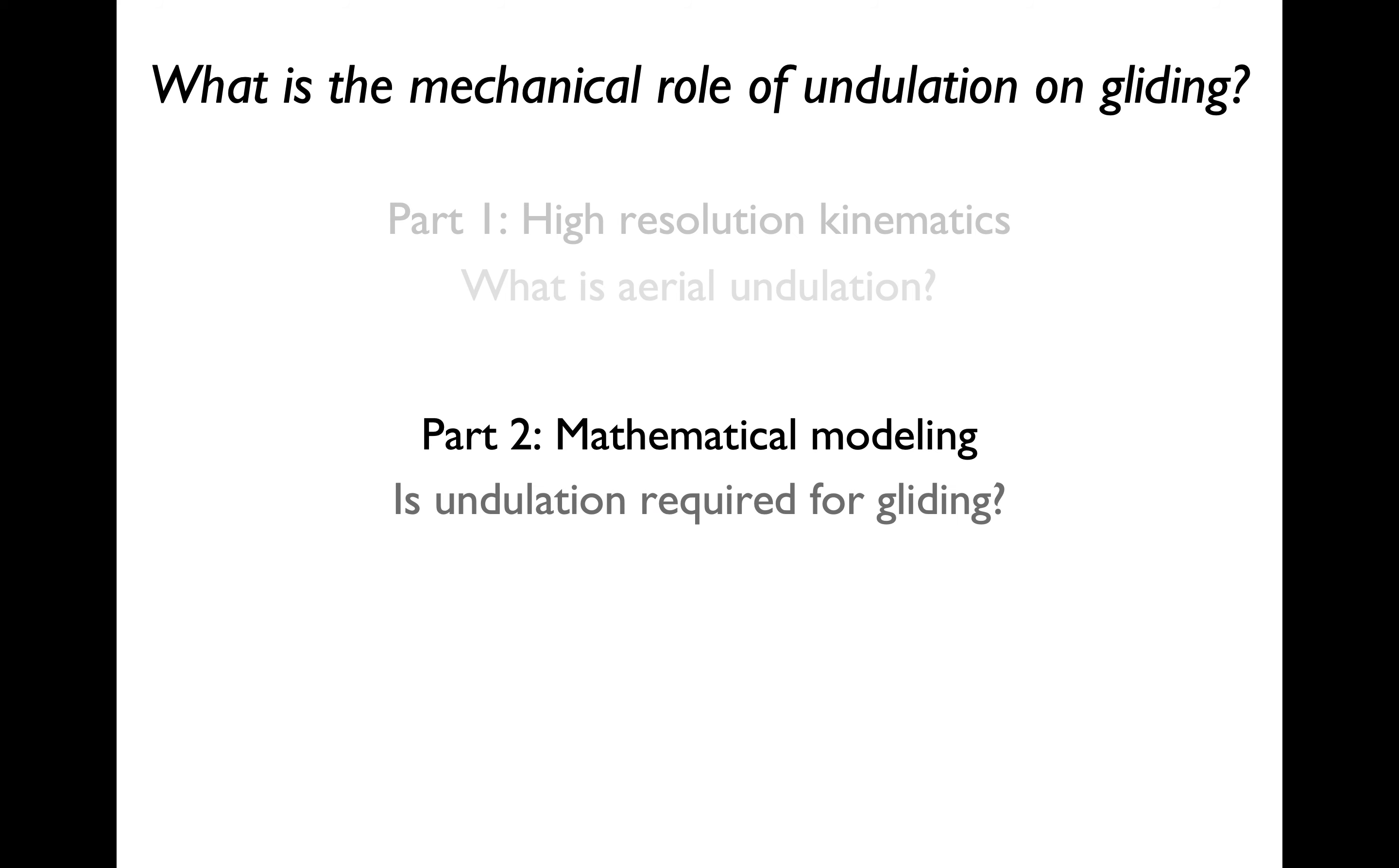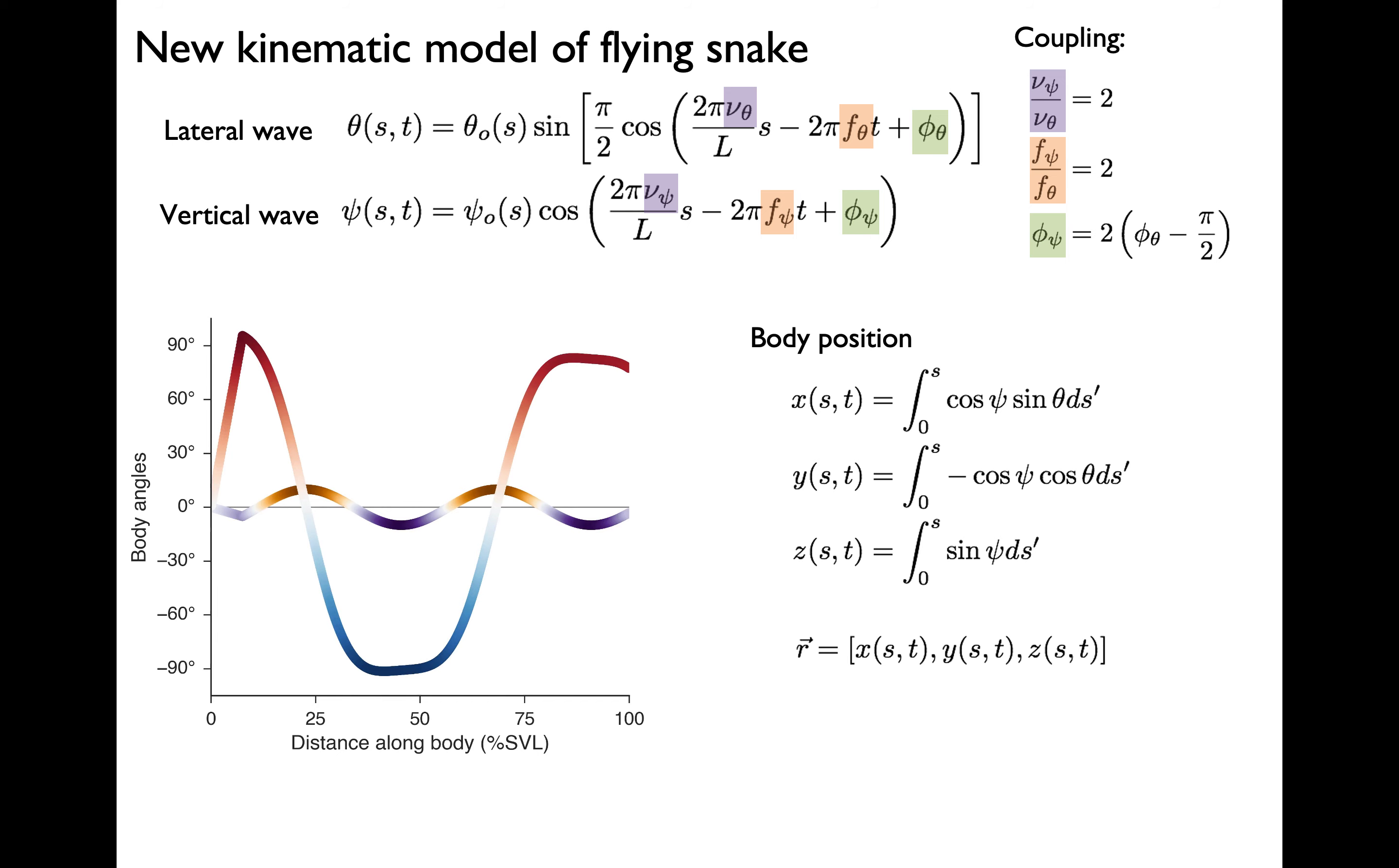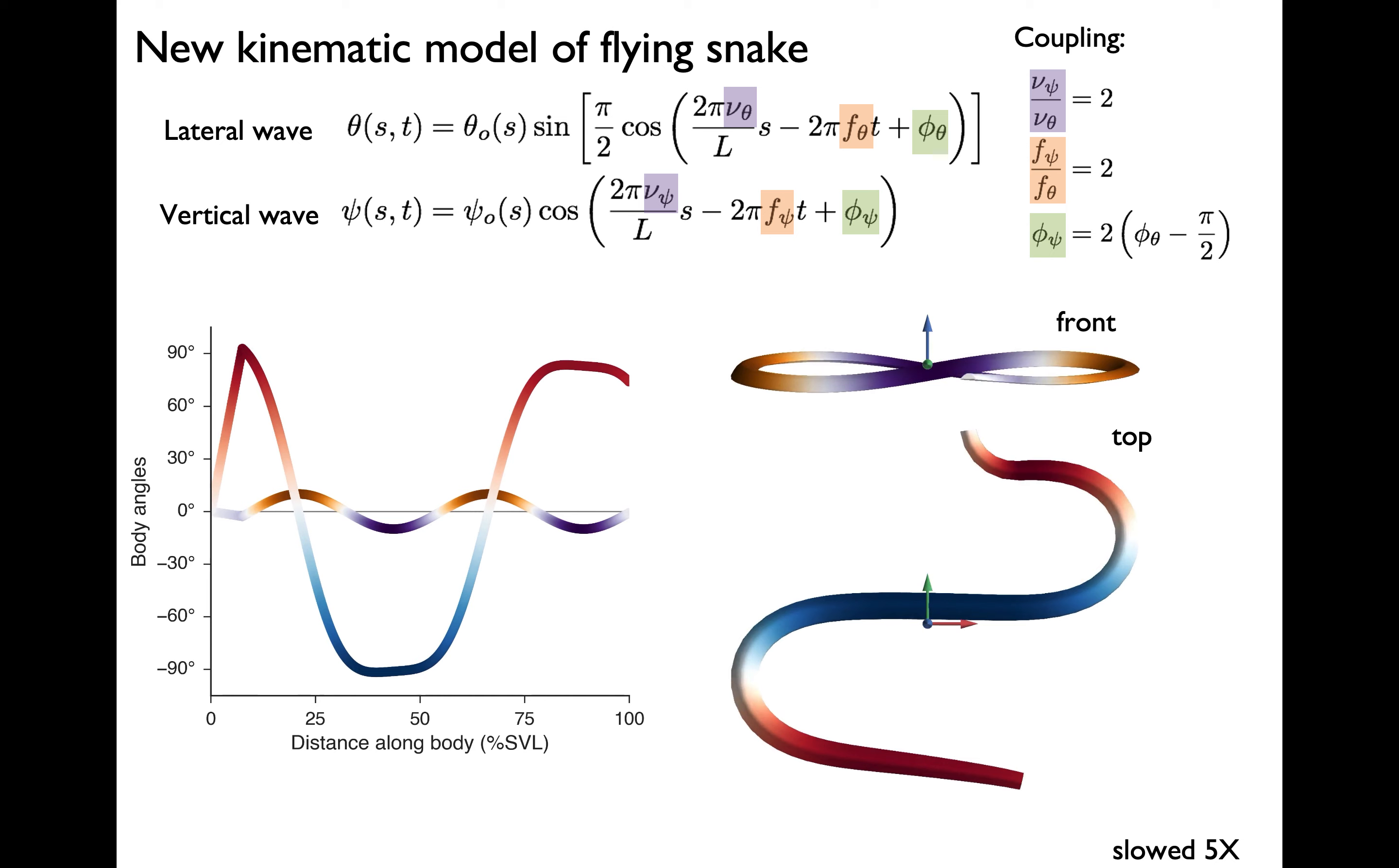Now we're going to use our knowledge of aerial undulation to model the snake flight. Based on the experimental data, we propose these two analytical expressions for the lateral and vertical bending angles. We have a few set parameters which we can vary to change the aerial undulation. These two waves are coupled as before. And when I plot them, you can see that they look qualitatively similar to the experimental data. We can recover the body position by integrating the bending angles. And now the traveling waves of bending become aerial undulation. And we maintain all the kinematic features from the experiments.